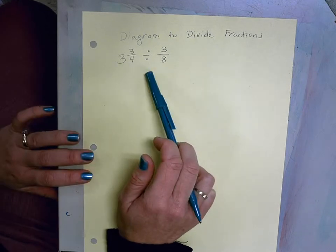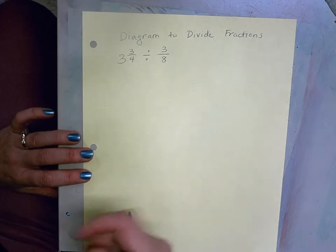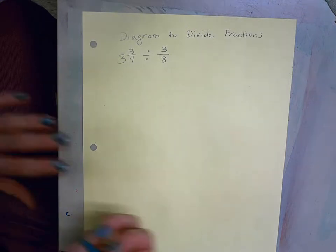So we already know how to divide by getting a common denominator, so we can review that quickly and then the diagram will just prove our answer.